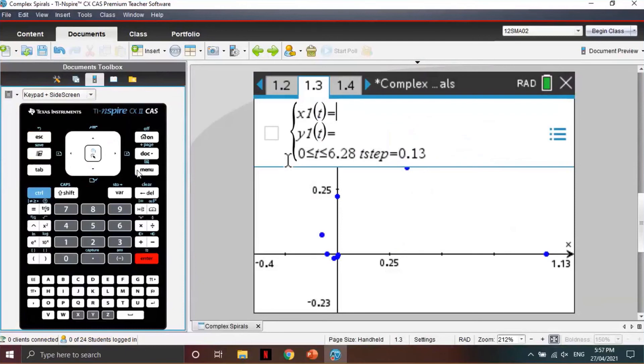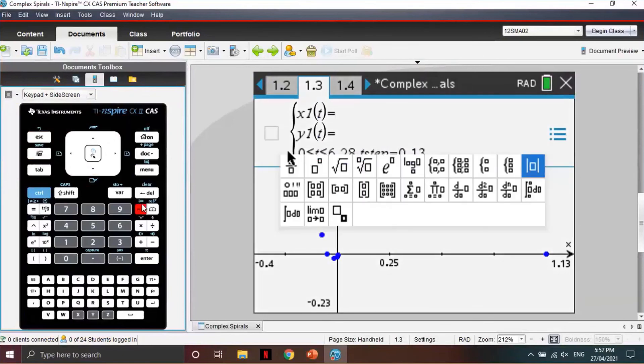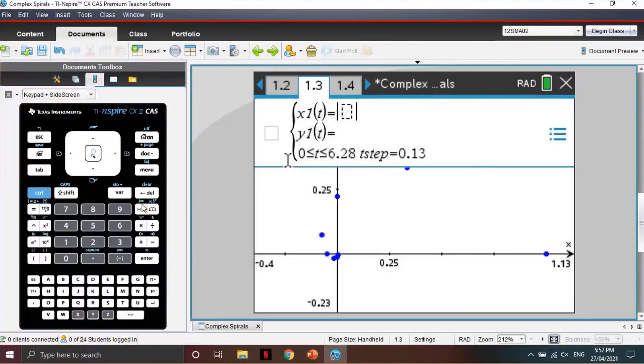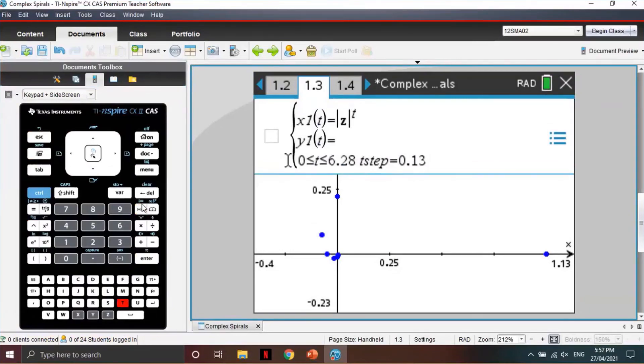The graph creates the investigation, so our X values are given by the modulus of Z. Now when raising to a power, when using the parametric template, we need to use T as our variable. And then we can multiply by the cosine of T times the angle of the complex number. So we can use the angle command to get our value for theta.